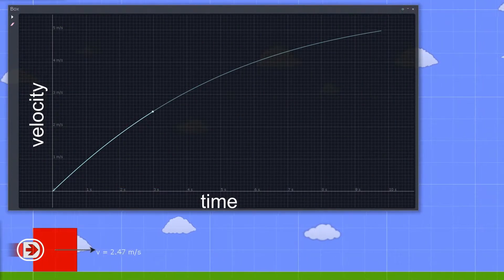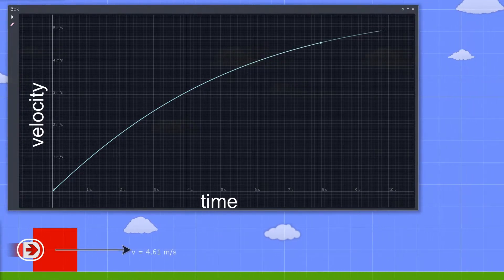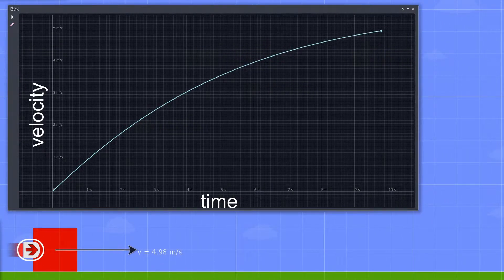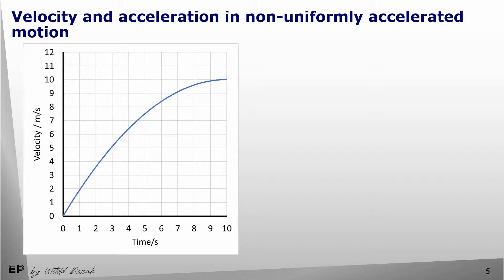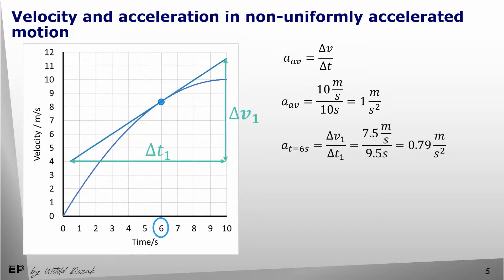The velocity of the object in this simulation does change, but it does not change by the same amount every second. So we are looking at an object moving with non-uniformly accelerated motion. We can use this graph to calculate the average acceleration. In this example, in the first 10 seconds velocity changed by 10 meters per second, so the average acceleration was 1 meter per second squared. To find the instantaneous acceleration, we can use the idea of a tangent to the graph. At t equals 6 seconds, the acceleration was 0.79 meters per second squared.